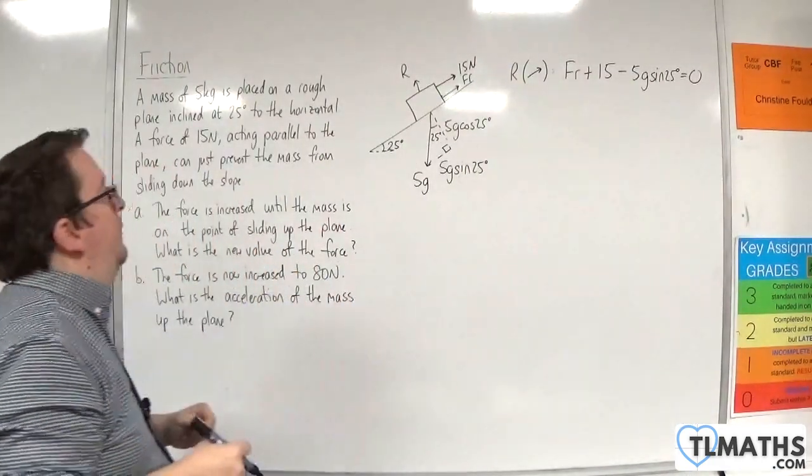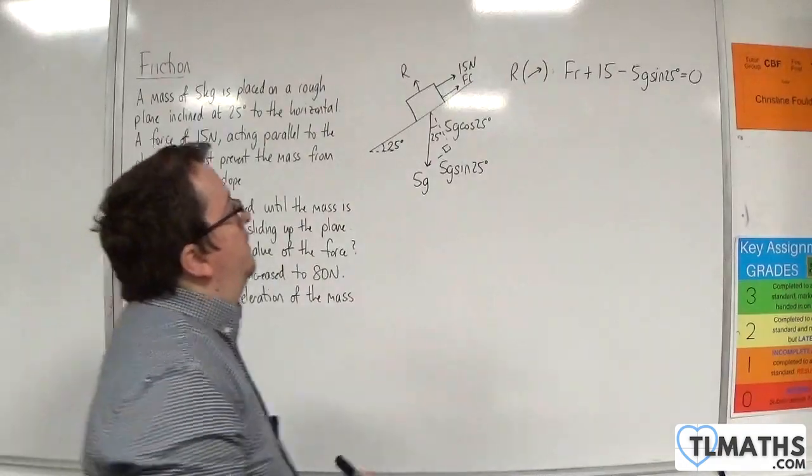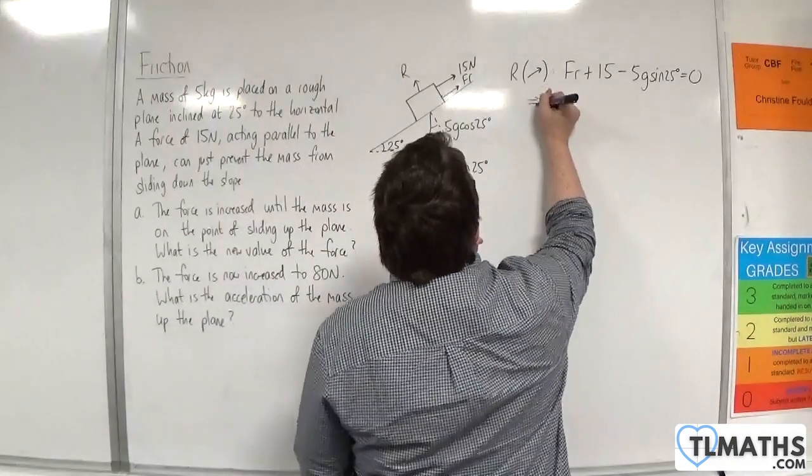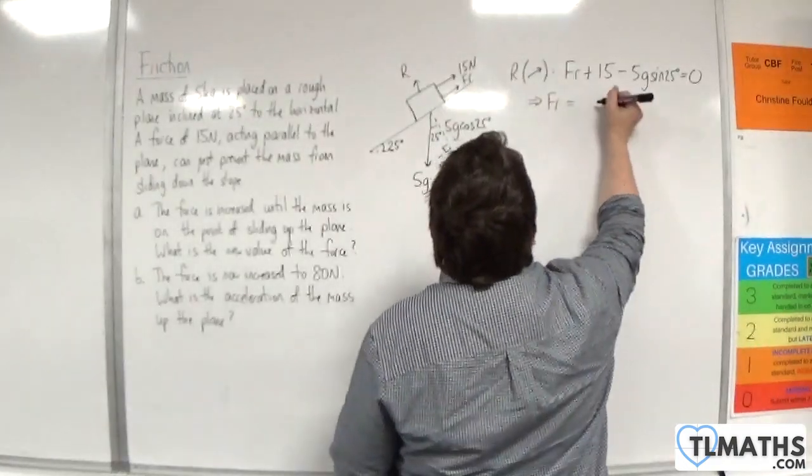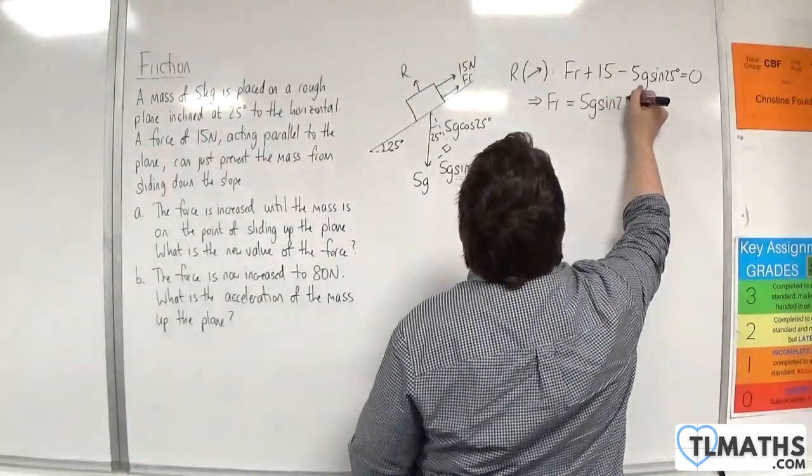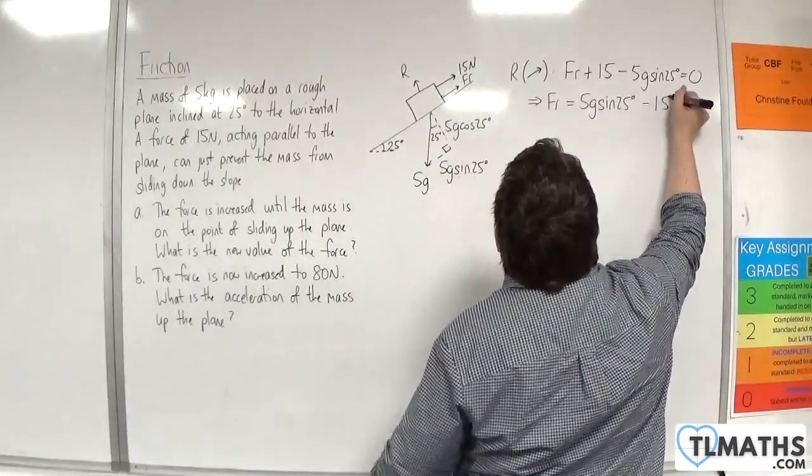Because it's on the point of slipping, so it's not accelerating. So the friction here is 5g sin of 25 take away 15.